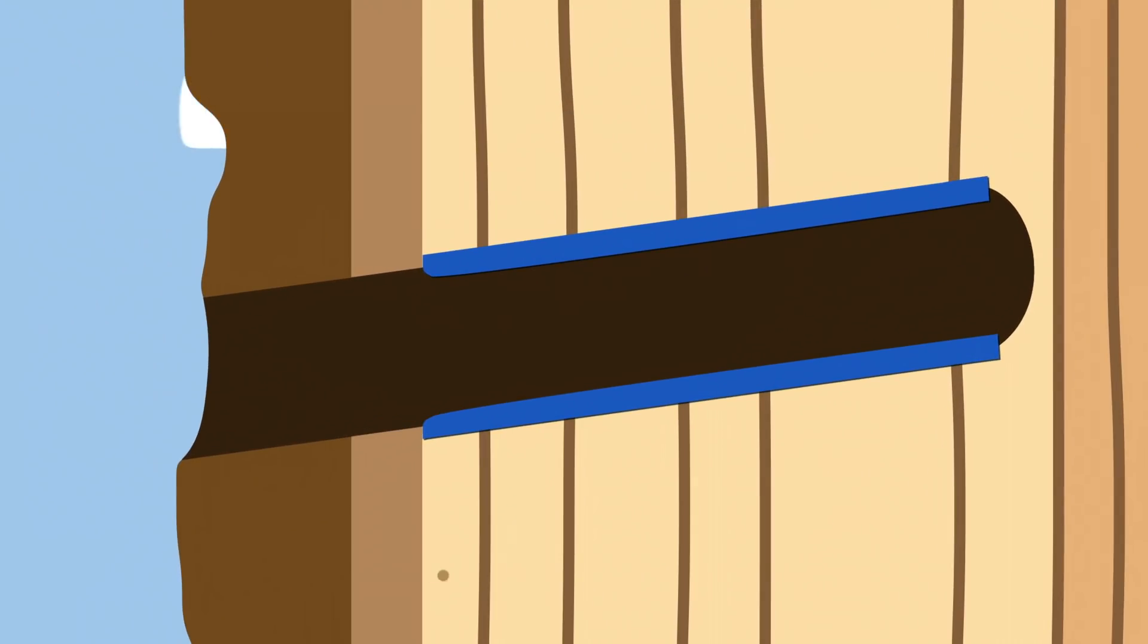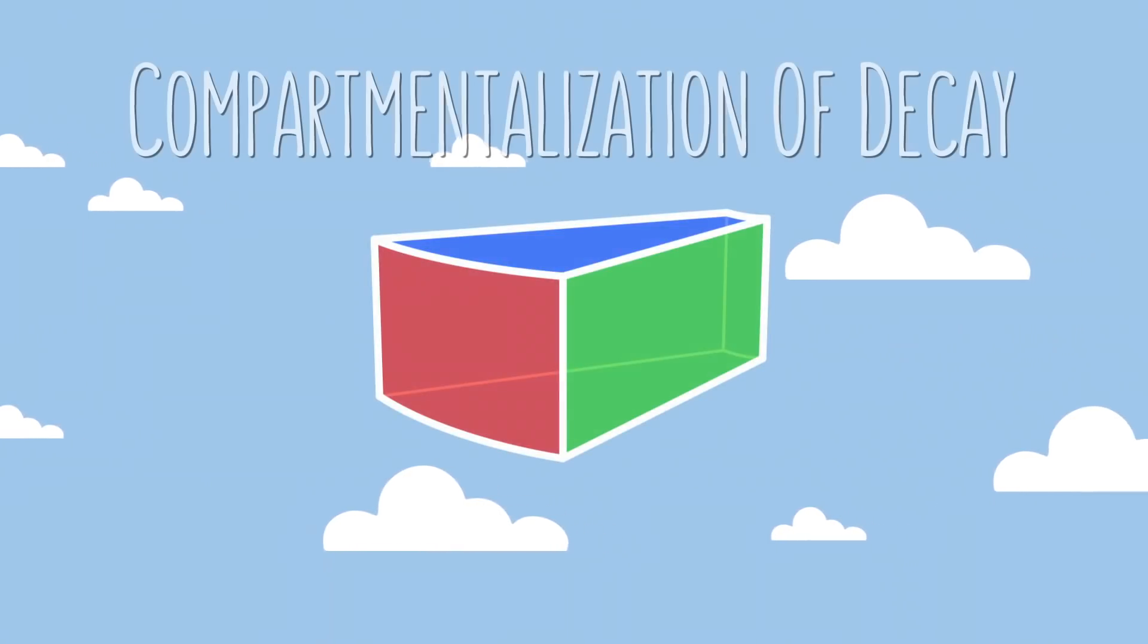Because thanks to the cambium, trees are really good at growing new cells on the outside. But unfortunately, they don't have the ability to repair or grow new cells on the inside. So instead, trees rely on a process called CODIT, or the compartmentalization of decay in trees.